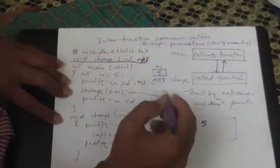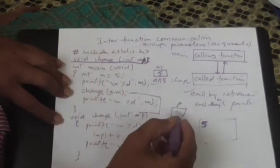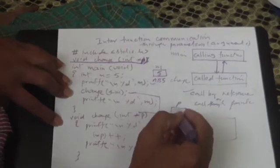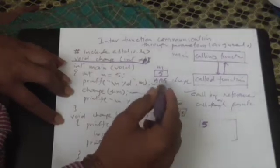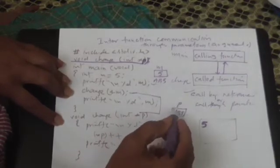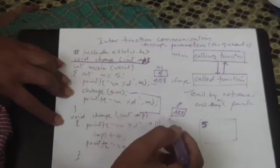So what happens is this address is taken into this p variable. So you say ab5 is the value which has been received into p. That's what you should be able to understand.